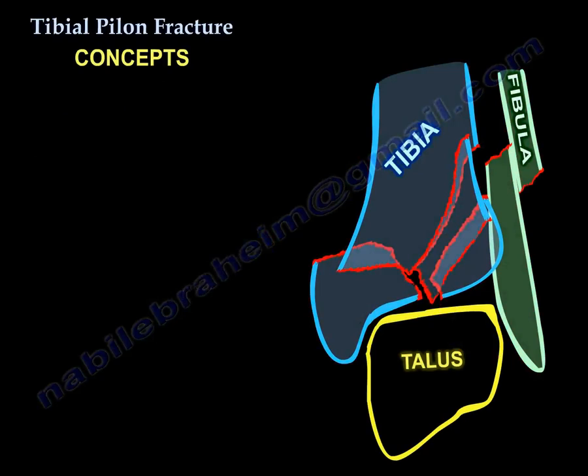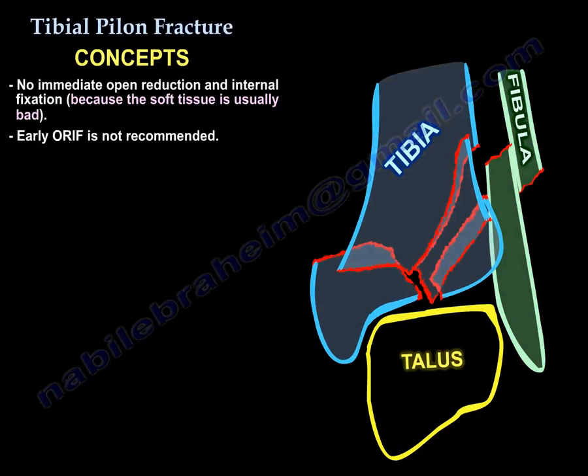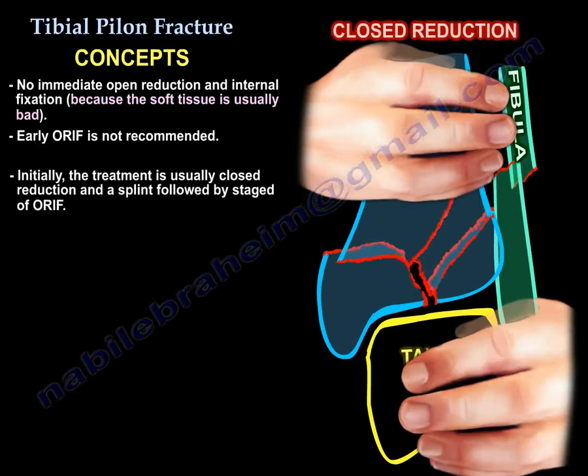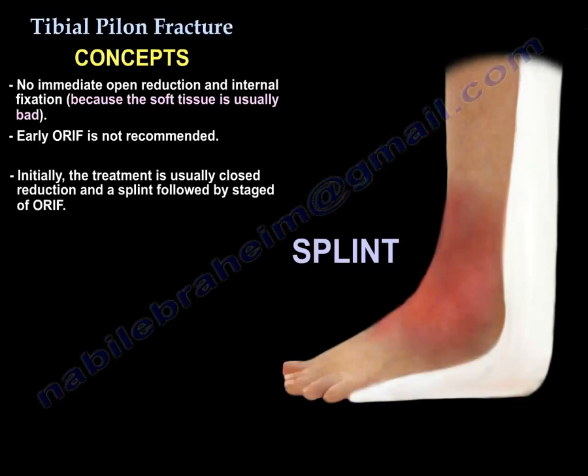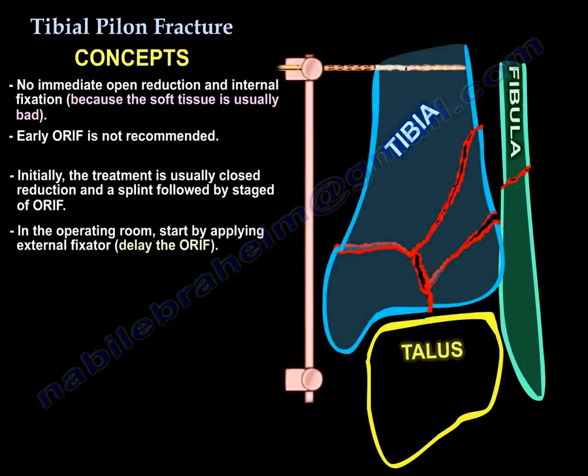Concepts of pylon fracture: No immediate open reduction and internal fixation because the soft tissue is bad. Early ORIF is not recommended. Initially, the treatment is usually closed reduction and splint, followed by staged open reduction internal fixation. You start by applying an external fixer, and you delay the open reduction internal fixation.